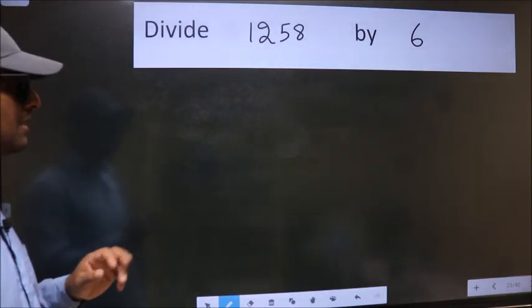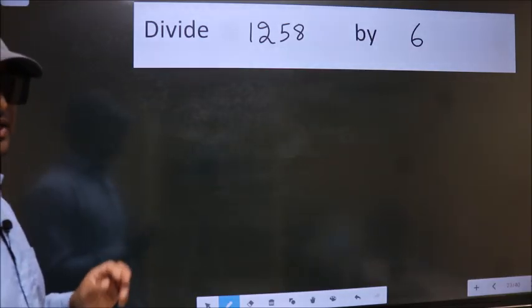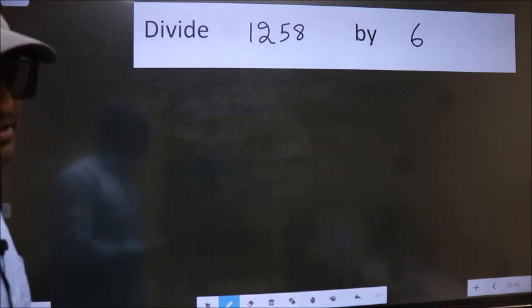Divide 1,258 by 6. To do this division, we should frame it in this way.